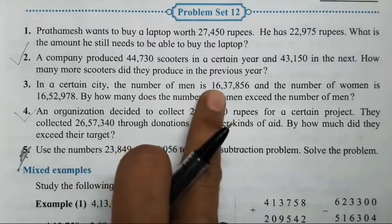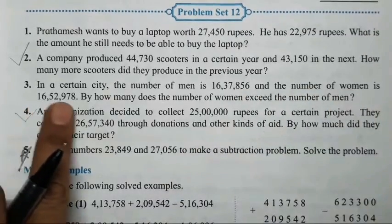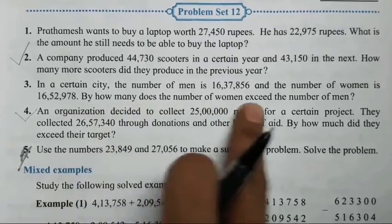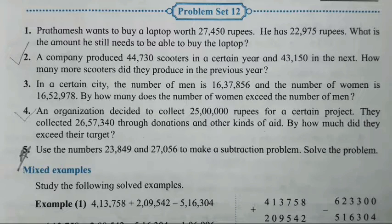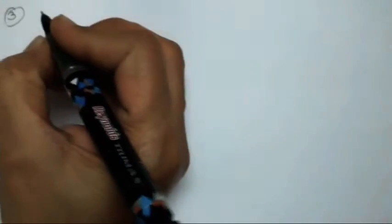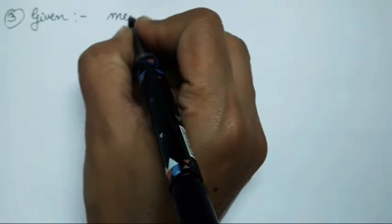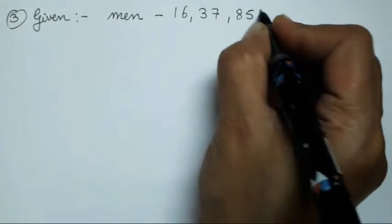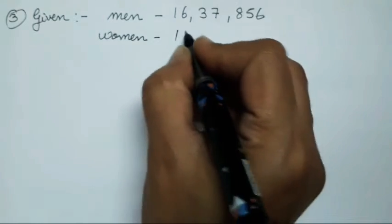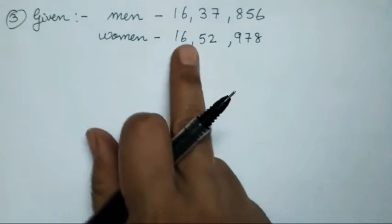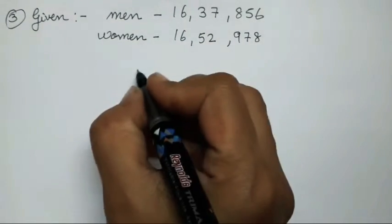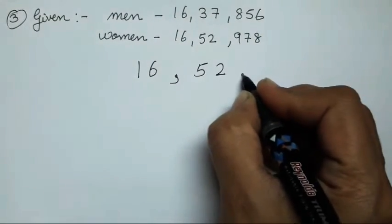In a certain city, the number of men is 16,37,856 and the number of women is 16,52,978. By how many does the number of women exceed the number of men? That we will find by subtracting. So write given: men — 16,37,856; women — 16,52,978. The women's number is greater, so we write the greater number first.